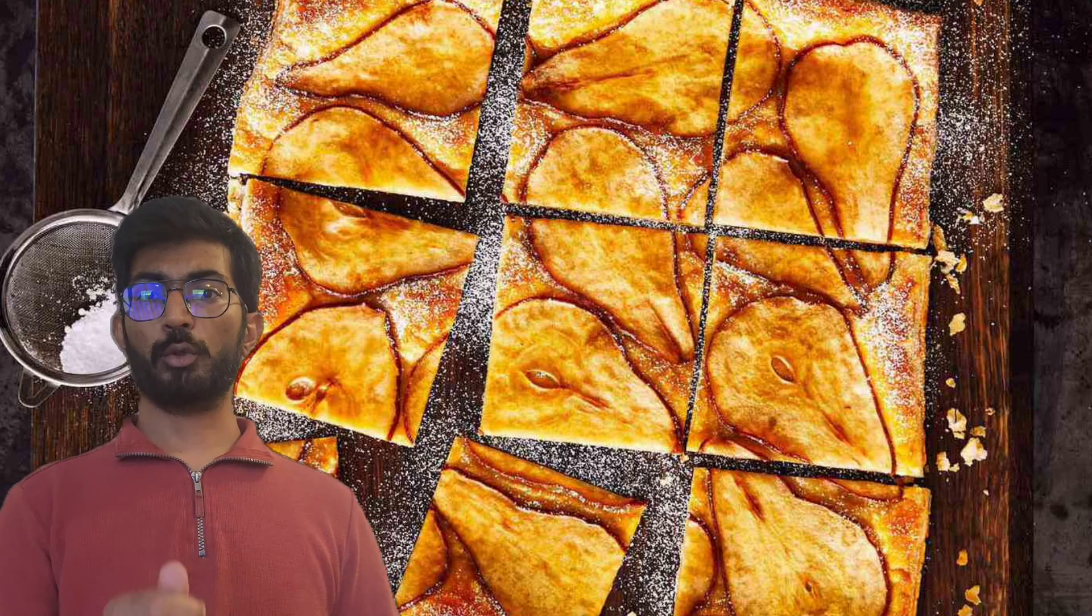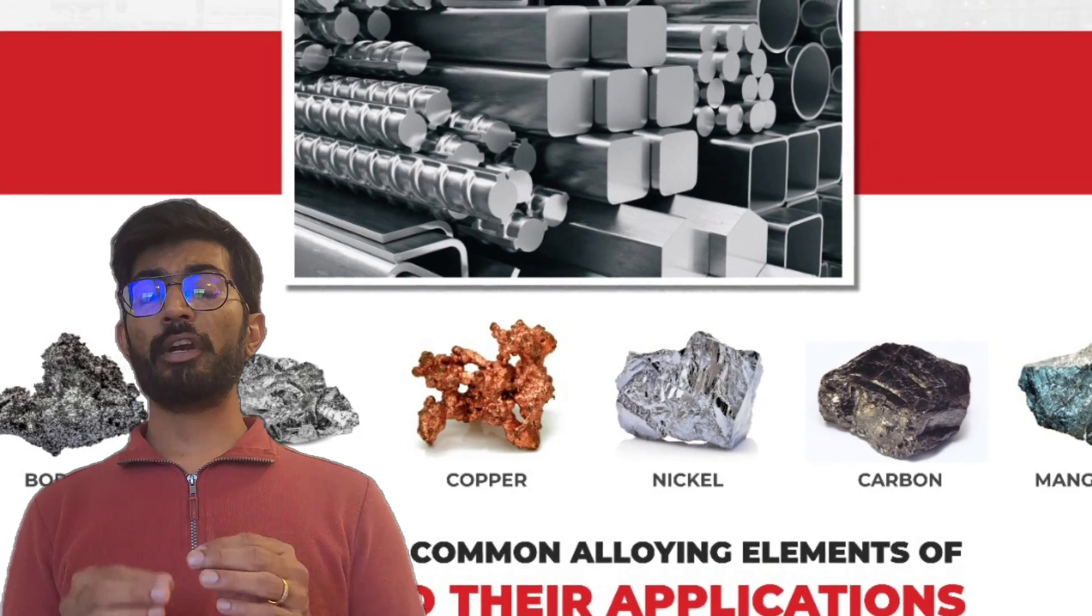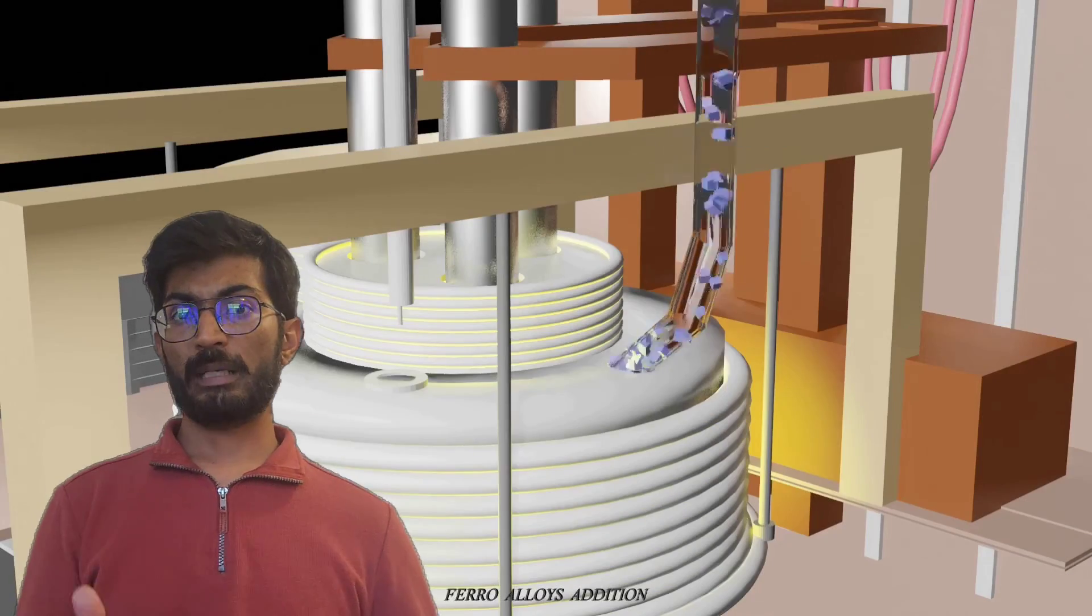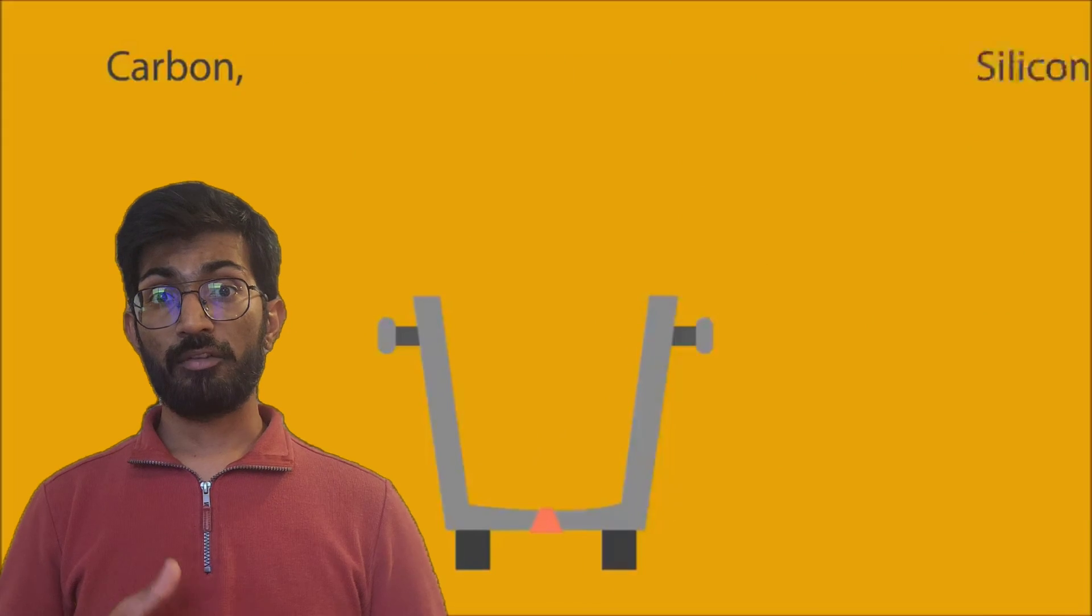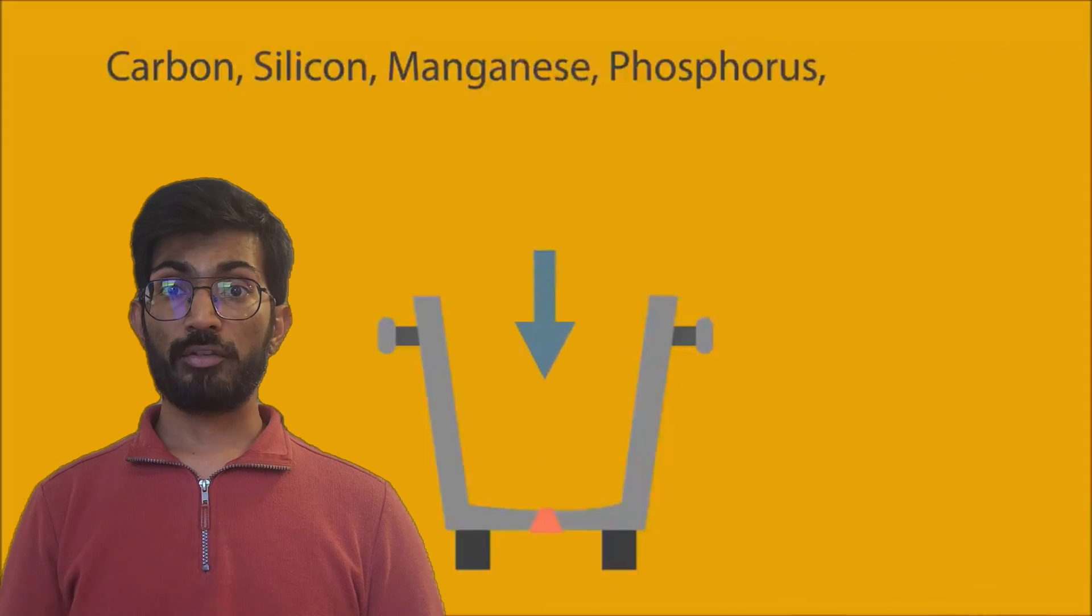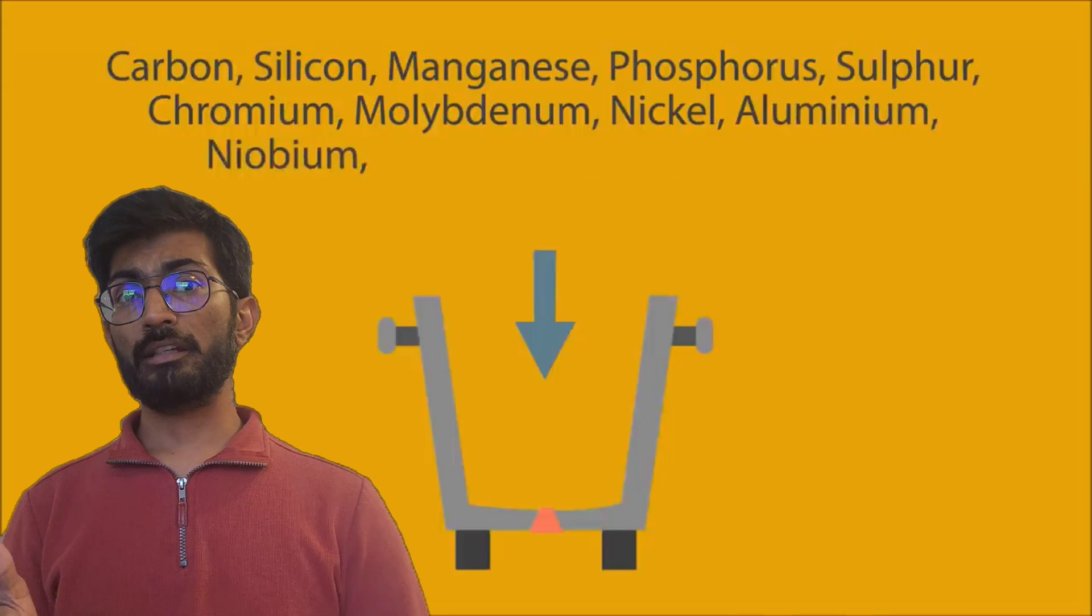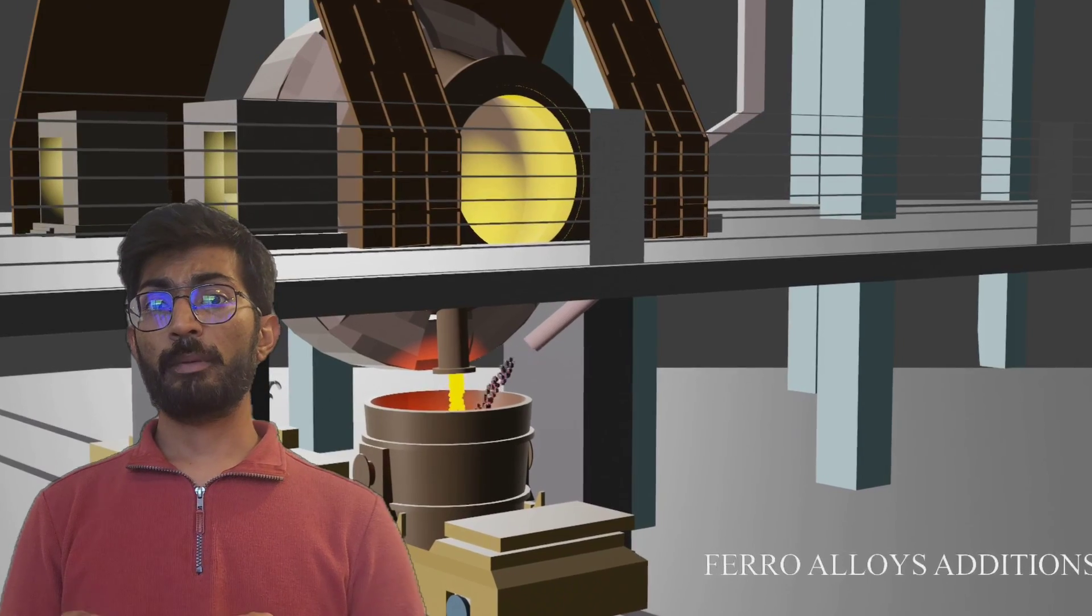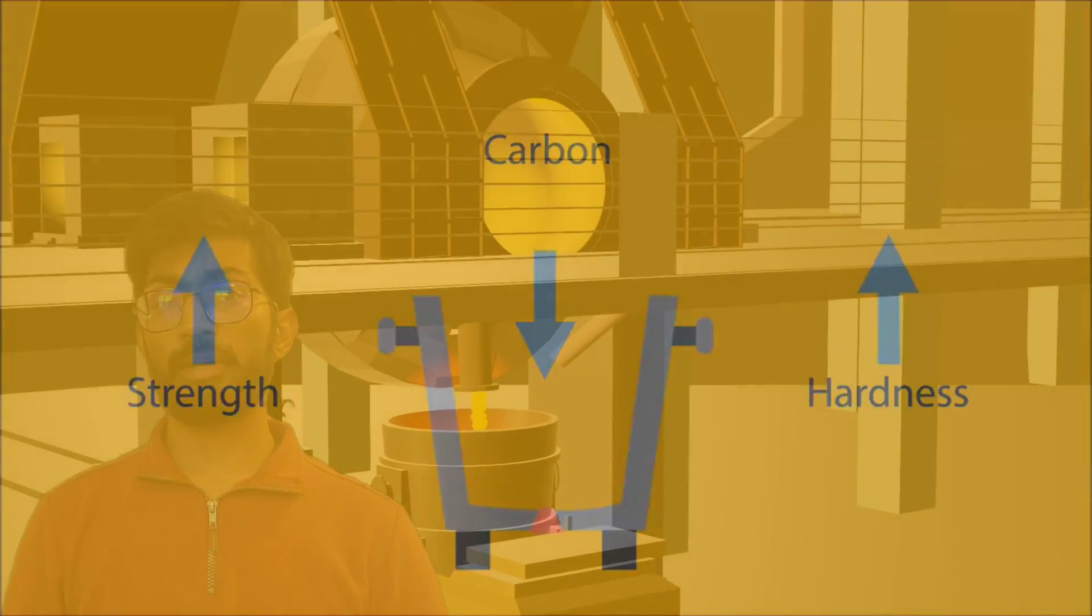You can think of steel making as like a recipe to make the perfect food. The only difference is in the steel industry, the ingredients are called alloying elements. The main elements that affect the property of iron are carbon, sulfur, manganese, phosphorus, chromium, molybdenum, nickel, and iron. Out of all that, carbon is the most important alloying element in steel. Carbon adds hardness and tensile strength to the structure.